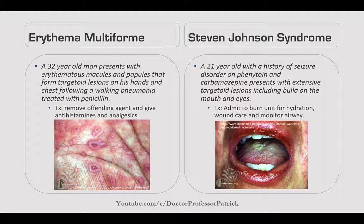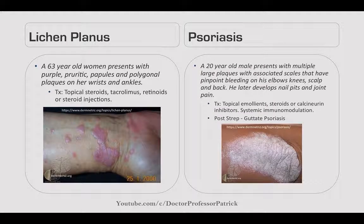Stevens-Johnson syndrome: a 21-year-old with a seizure disorder on phenytoin and carbamazepine presents with extensive targetoid lesions, including bullae, on the mouth and eyes. Treat by admitting to a burn unit for hydration, wound care, and airway monitoring. Lichen planus: a 63-year-old woman presents with purple pruritic papules and polygonal plaques on her wrists and ankles. Treat with topical steroids, tacrolimus, or steroid injections.